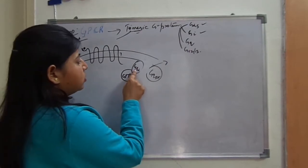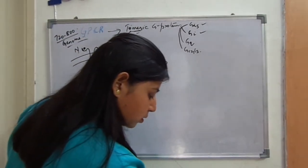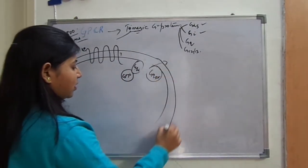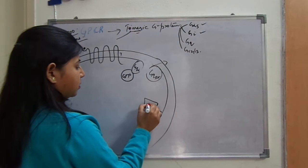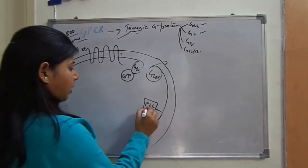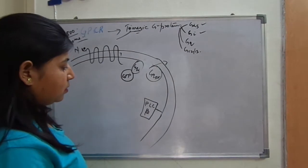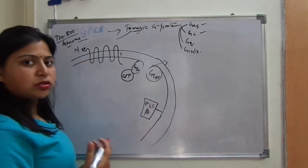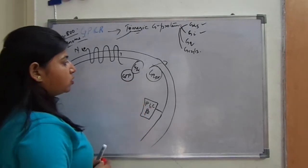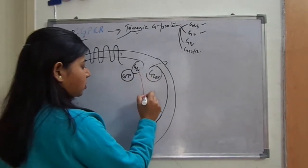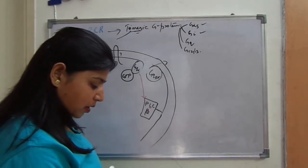When GTP binds to G-Q, it becomes activated. After activation, there is a plasma membrane-bound enzyme known as phospholipase C beta. Remember this beta term — phospholipase C beta. This is a lipase enzyme. The function of lipase is to cleave lipid molecules. So G-Q alpha activates this phospholipase C beta enzyme.